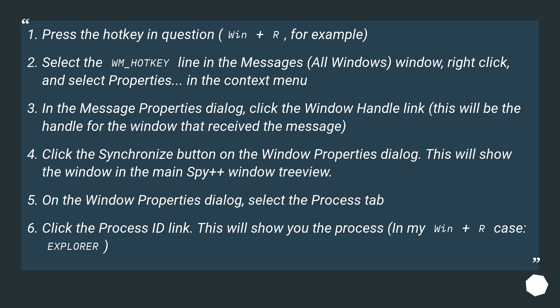Click the Synchronize button on the Window Properties dialog. This will show the window in the main SPY++ window tree view. On the Window Properties dialog, select the Process tab. Click the Process link. This will show you the process — in the Win+R case, Explorer.